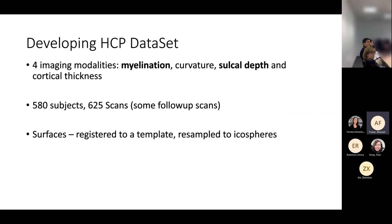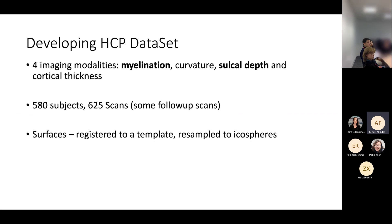The DHCP dataset is great in that we have four imaging modalities, but in this work I just use myelination and sulcal depth — surface-extracted images with imaging modalities on them. There are 625 scans but 580 subjects, meaning some are follow-up scans. Extracted surfaces are nicely registered to a template and resampled to what are essentially spheres, to make processing, analysis, and modeling easier. Mathematically, we don't lose much because a sphere and a brain are topologically equivalent.